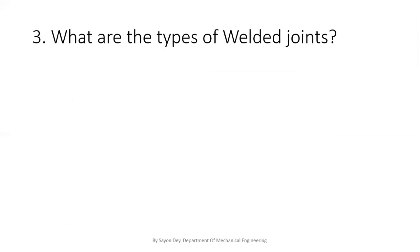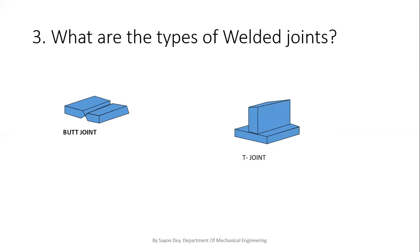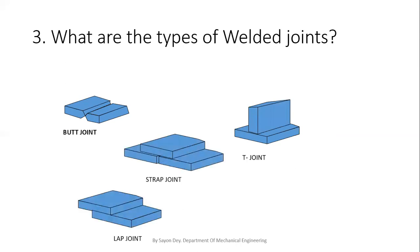What are the types of welded joints? The most popular welded joint is the butt joint, followed by T-joint, strap joint, lap joint, and corner joint. Other joints are also there — like the edge joint, which is not mentioned here but should be included. These are the types of welded joints.